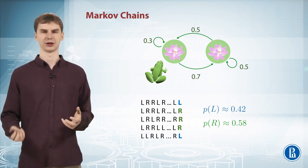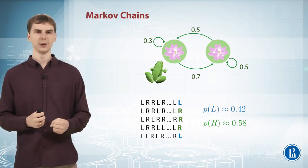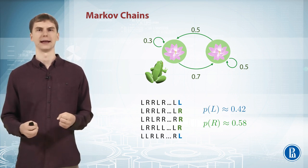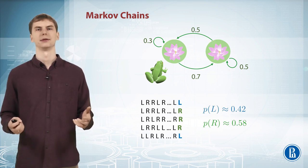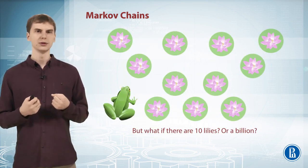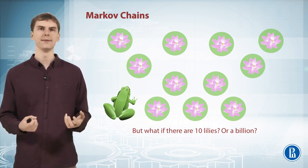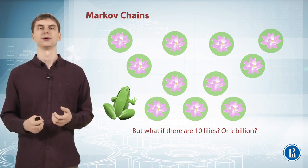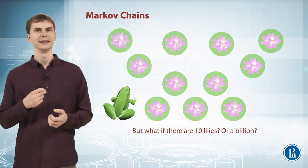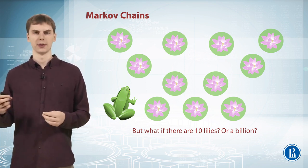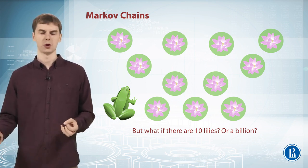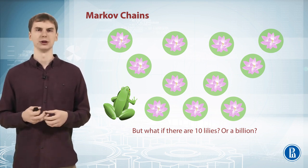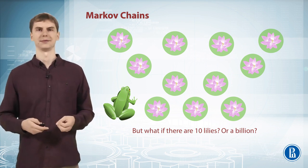This is a roundabout way to generate samples from this discrete distribution — there is a much simpler way discussed in the previous video. But note that this approach — build a dynamic system, simulate it, see where it ends up — works for more complicated cases. What if you have 10 lilies or 1 billion lilies? In the naive approach, with 1 billion values in your discrete random variable, you'd spend time proportional to 1 billion to generate one sample. With this idea of simulating a dynamic system for, say, 1,000 steps, you can get a random sample from the complicated distribution without the overhead of the naive approach.